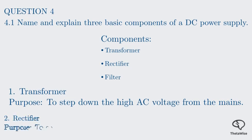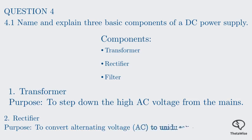Next up is the rectifier — the heart of converting AC to DC. It's the process of converting an alternating voltage, which periodically reverses direction, into a unidirectional voltage, which only flows in one direction. In other words, the rectifier changes the AC waveform into a pulsating DC waveform. It doesn't give a perfectly smooth DC yet, but it's the first step towards getting DC.